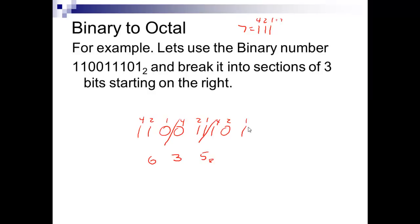Divide the binary number into groups of three starting from the least significant side, put your chart of one, two, four on top of each group, and convert each group to its decimal equivalent. Four plus two is six, two plus one is three, four plus one is five. That's all there is to it.